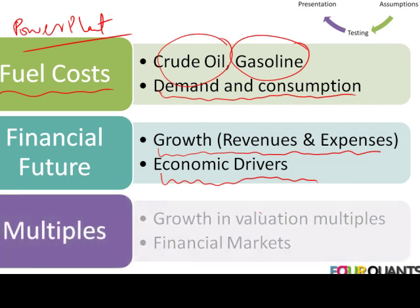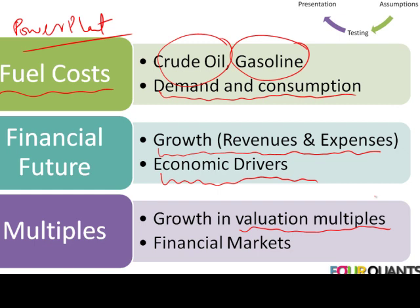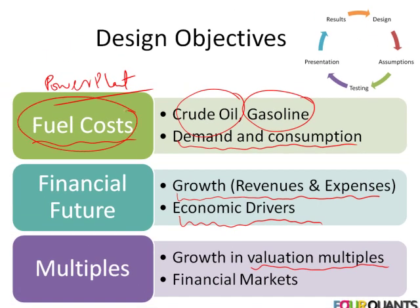If I'm looking at valuation, the primary question is how financial markets would respond to and value my business. If the primary driver is valuation multiples, how would these multiples change, grow, and behave over the next few years? So from a design objective point of view: if my primary driver is fuel cost, I need to figure out how to incorporate that in my model. If my analysis is based on the financial future of the business, or if my focus is on understanding how multiples would behave — I need to incorporate that in my model. All of this falls into design objectives.